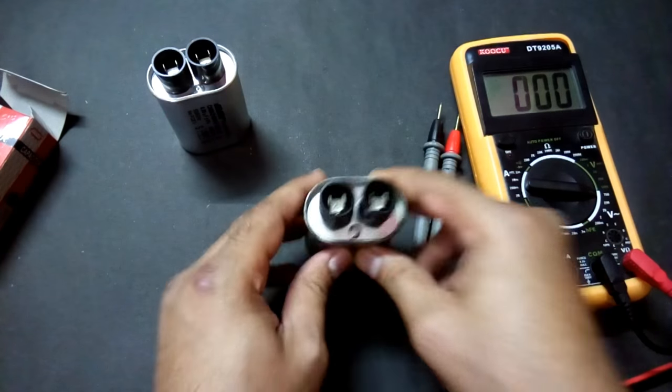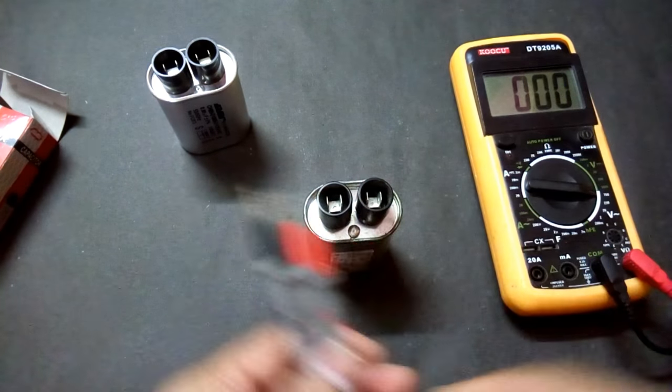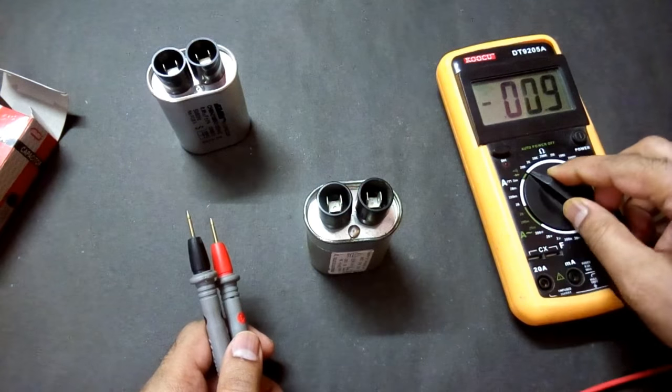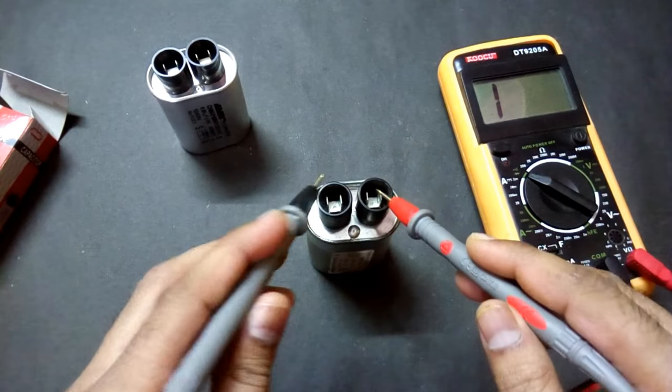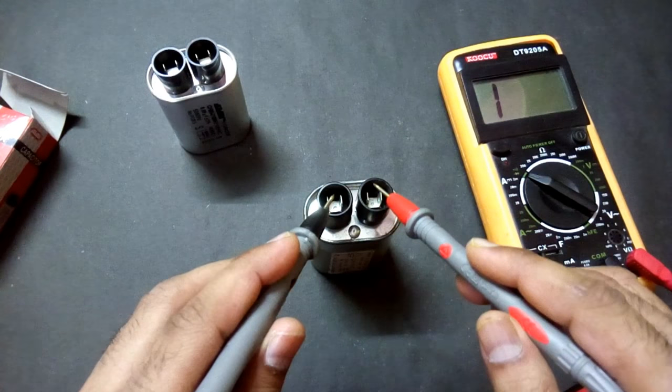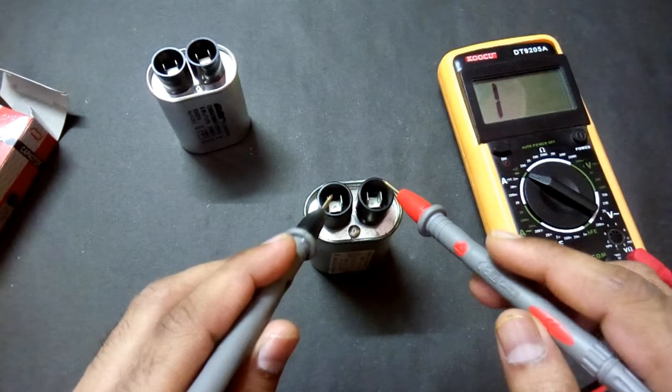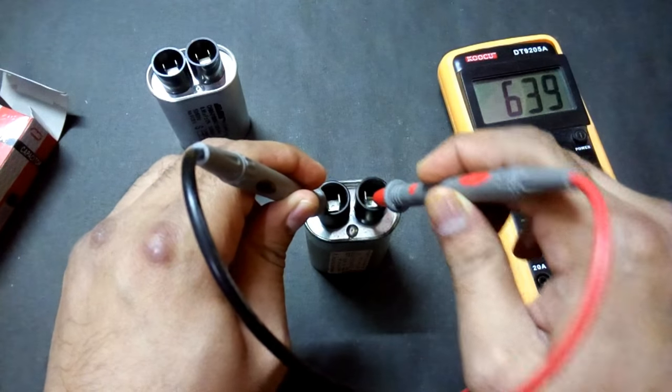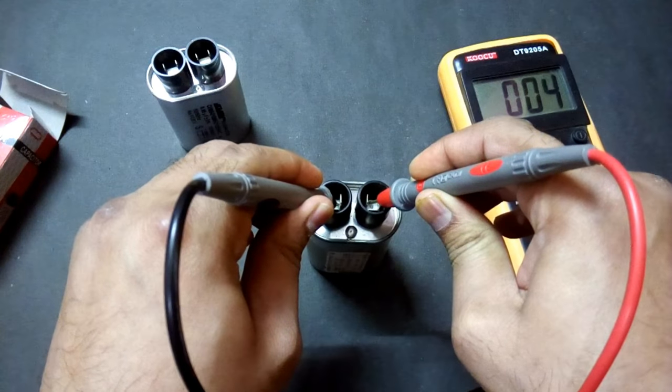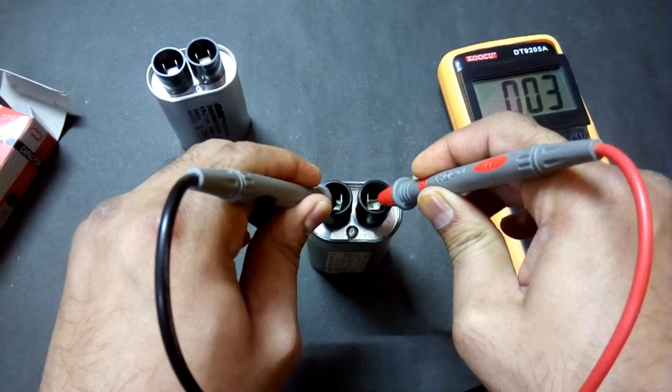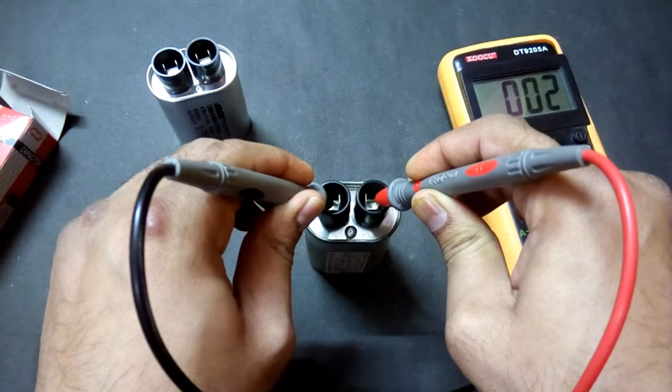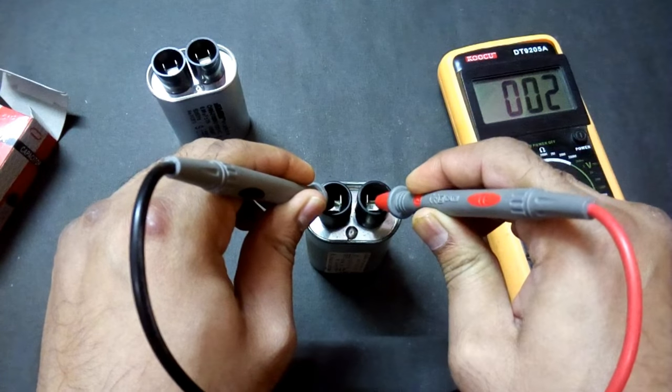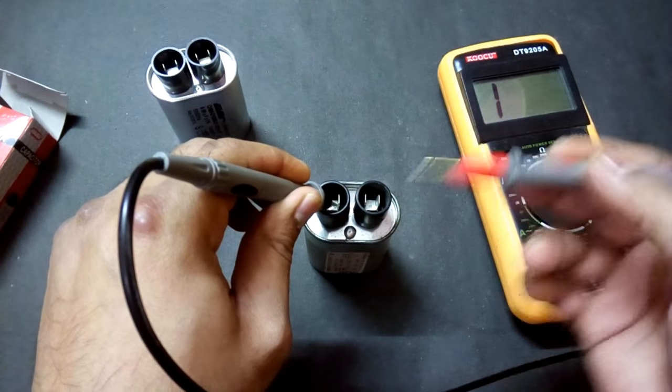We're going to start with the bad one. First of all, set your meter at the continuity and check these two terminals. This must not have any continuity. And here we're having continuity between these two terminals, so that means it's bad.